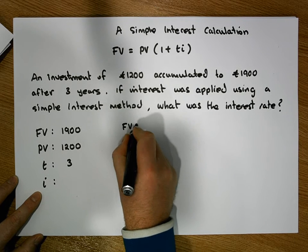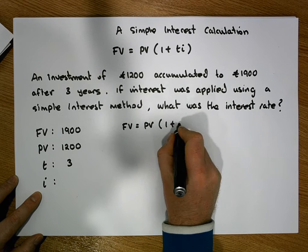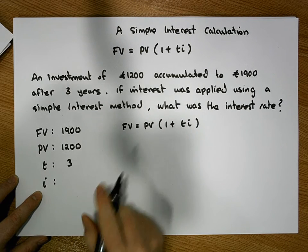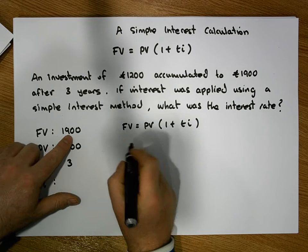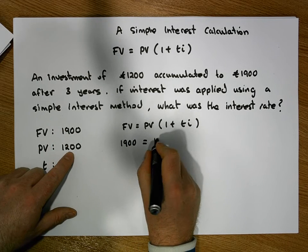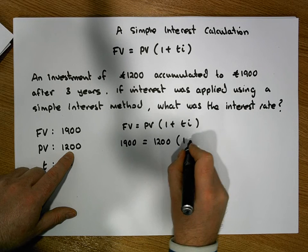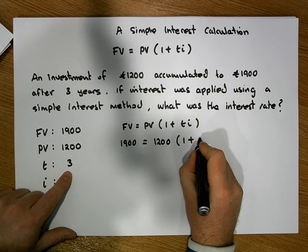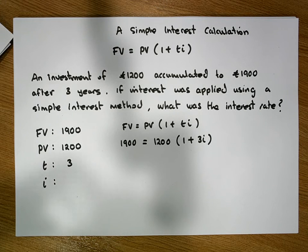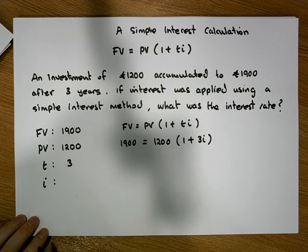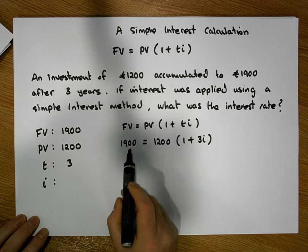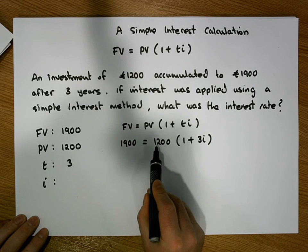Let's substitute all of these values into our formula: FV equals PV times one plus T times I. Substituting in, we get: 1,900 equals 1,200 times one plus three I. We could multiply out the brackets, but what we should probably do is divide both sides by 1,200.